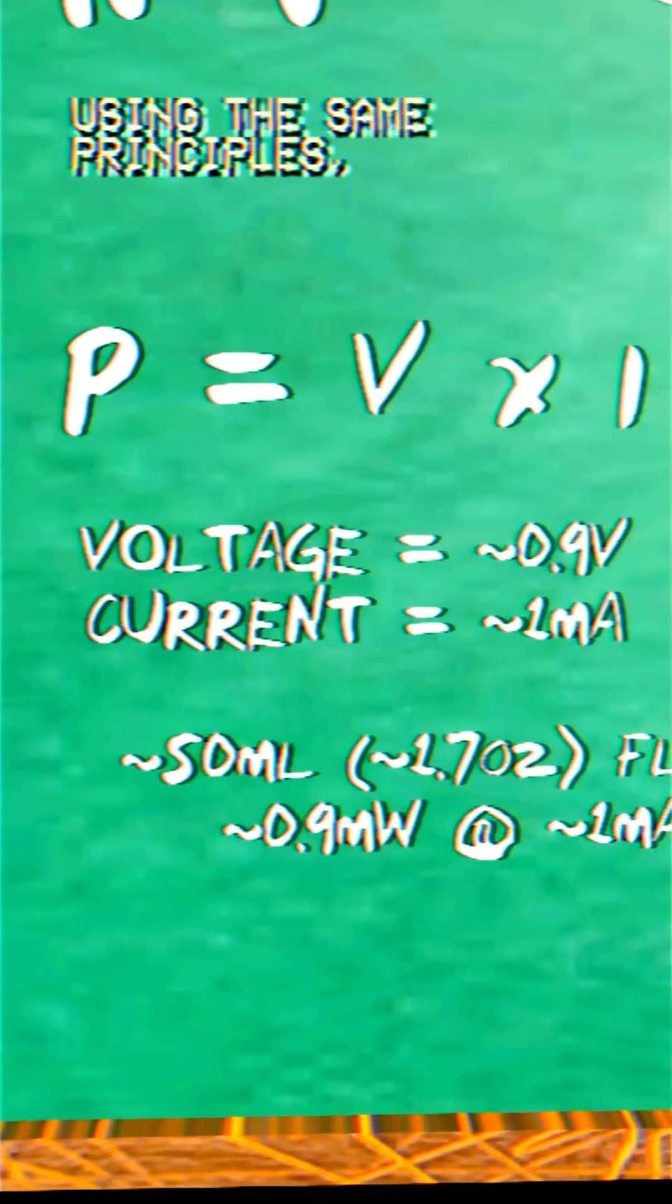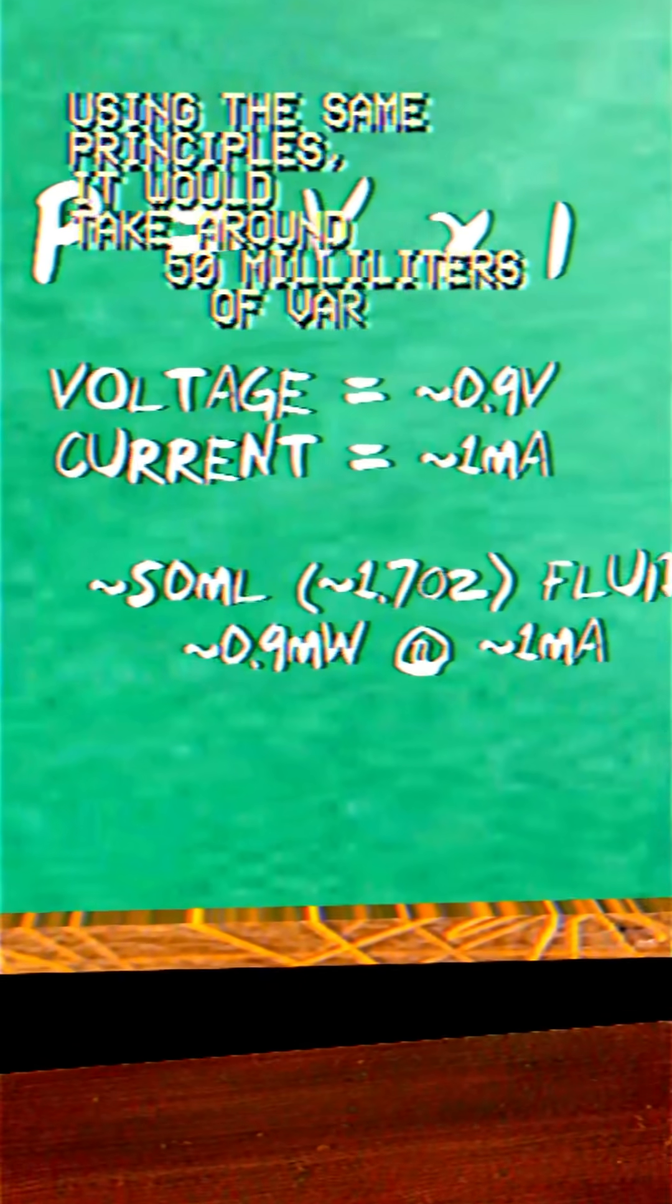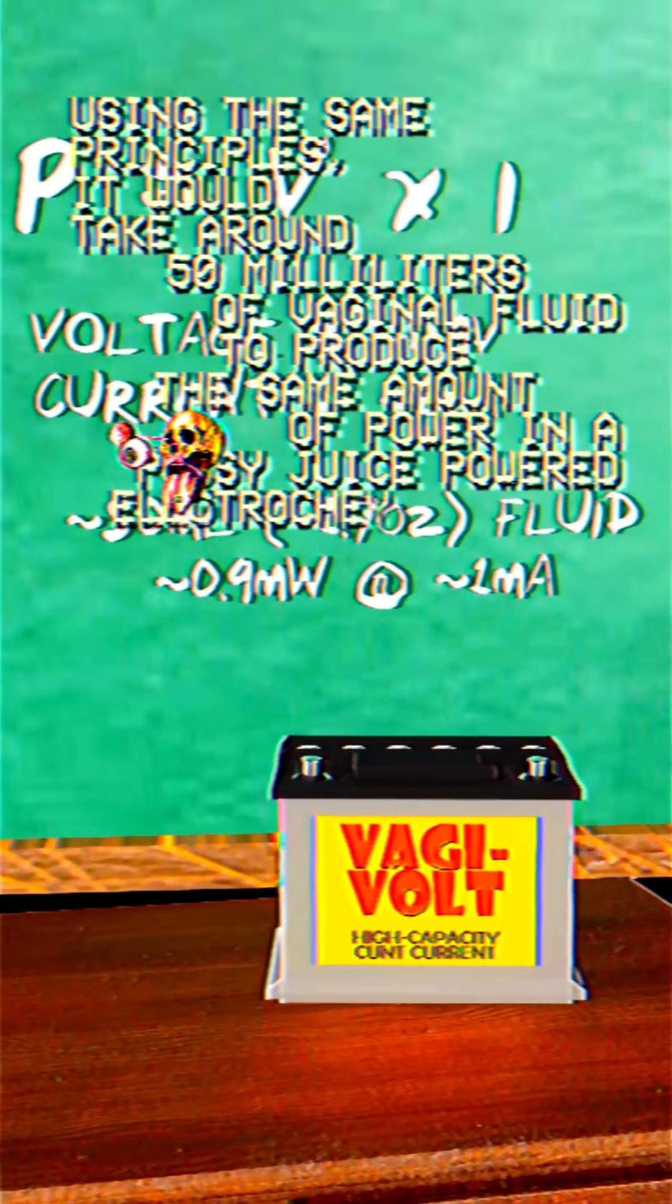Using the same principles, it would take around 50 milliliters of vaginal fluid to produce the same amount of power in a vaginal juice-powered electrochemical cell.